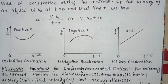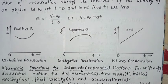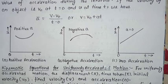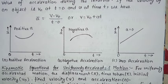Next, kinematics equations for uniformly accelerated motion. The three kinematic equations are: first, V = u + at; second, s = ut + ½at²; and third, V² = u² + 2as.